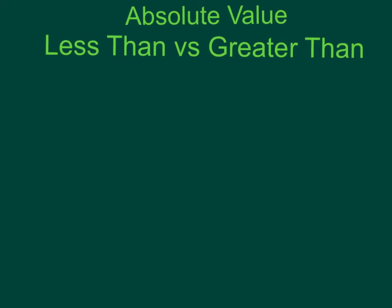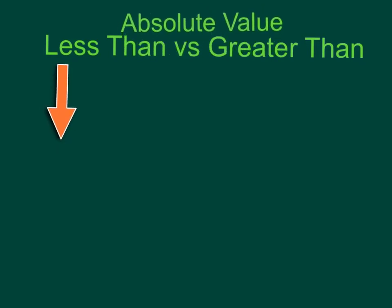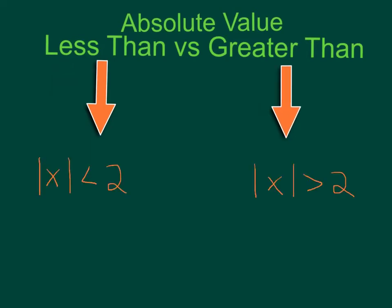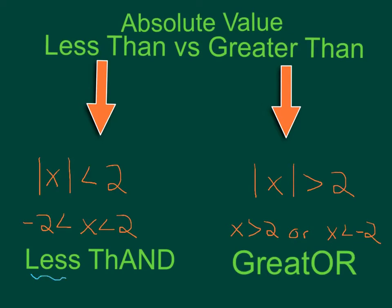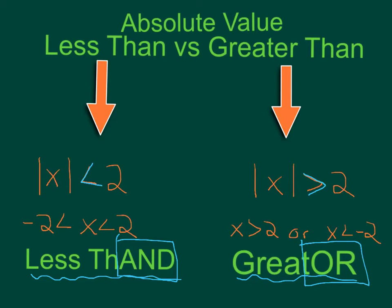So let's look at how absolute value inequalities change when you have less than versus greater than. When we had absolute value of x is less than 2, it turned into an and statement. And when we had greater than, it turned into an or statement. To help remember: less than and, greater than or. When you have a less than sign it turns into an and statement, and when you have a greater than sign it turns into an or statement. So absolute value turns into compound inequalities.